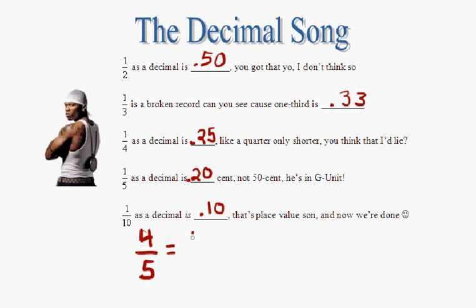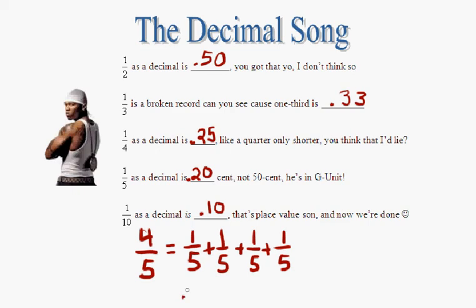So four fifths is going to be a fifth, plus one fifth, plus one fifth, plus one fifth, because I know what one fifth is, that's twenty cents. So it's twenty, plus another twenty, plus another twenty cents, plus another twenty cents. So that's twenty, plus twenty, plus twenty, something you should be able to do in your head. Four fifths as a decimal is eighty cents, or zero point eight zero.